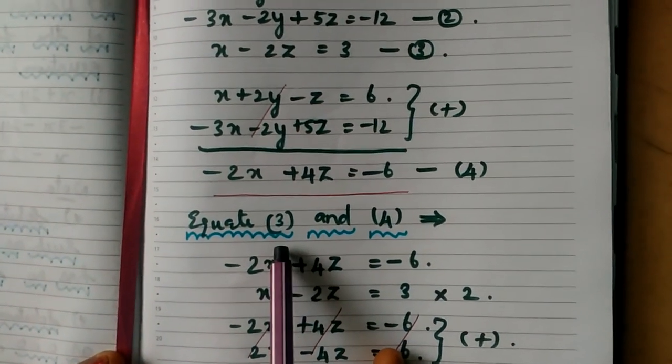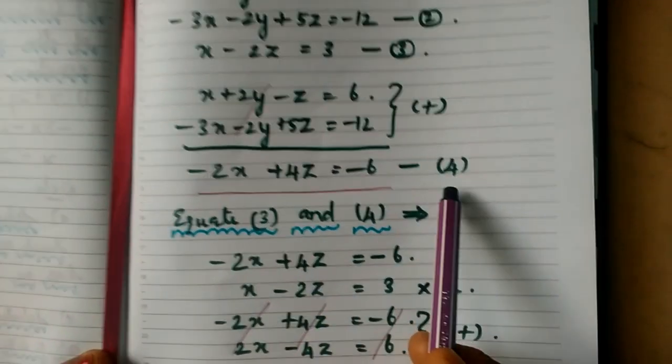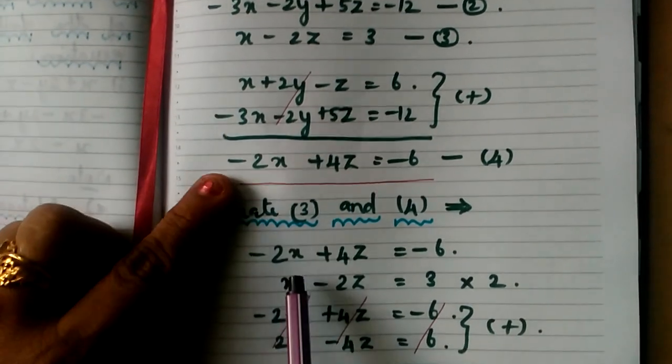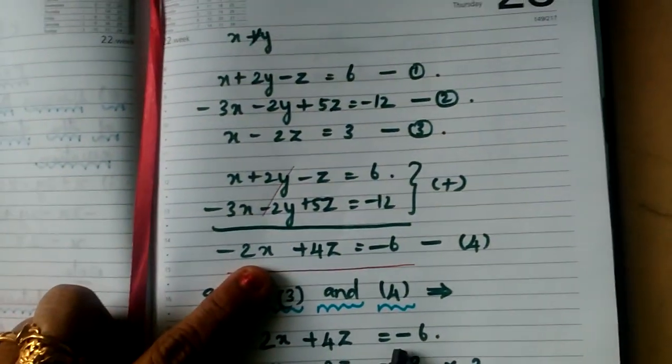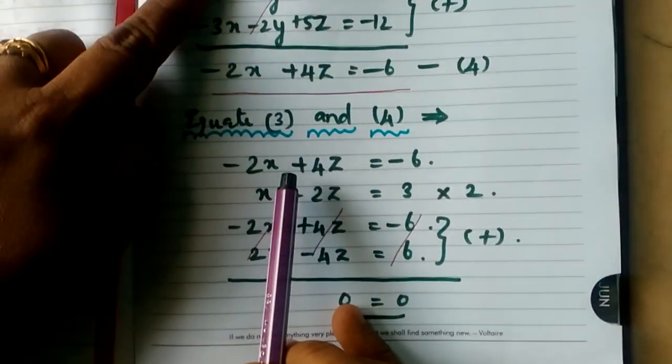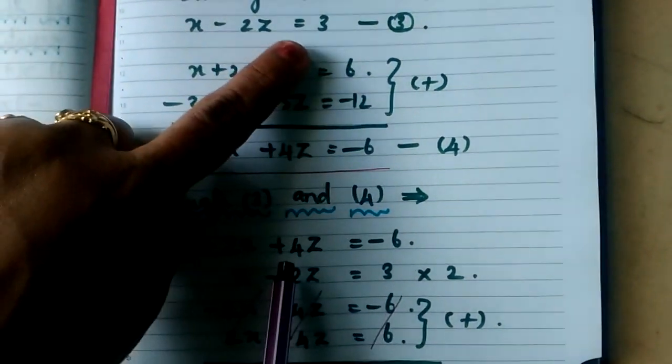At last, finally, we are going to equate equation number 3 and 4. Equation number 3 and 4 we are going to equate. So which implies, what is the fourth equation? Minus 2X plus 4Z equal to minus 6. Here, as a third equation, X minus 2Z equal to 3.